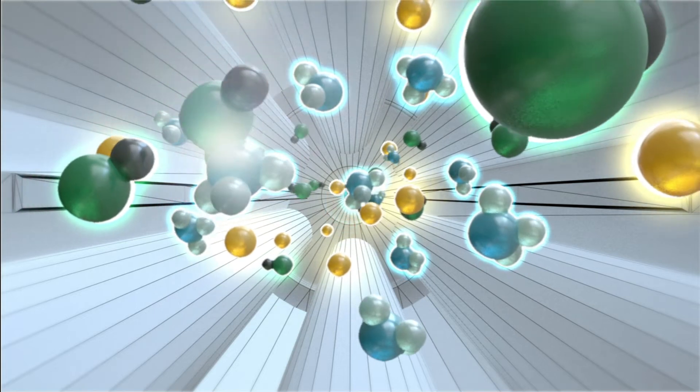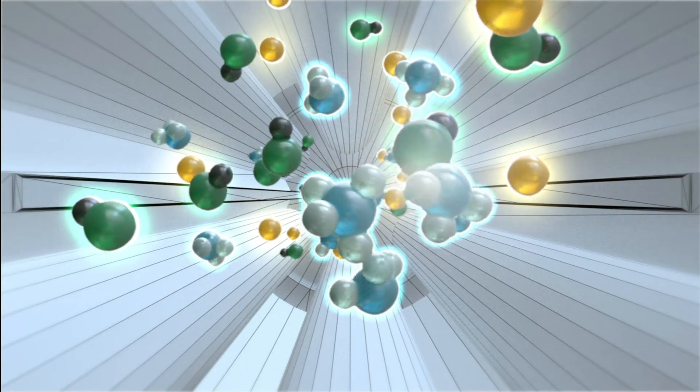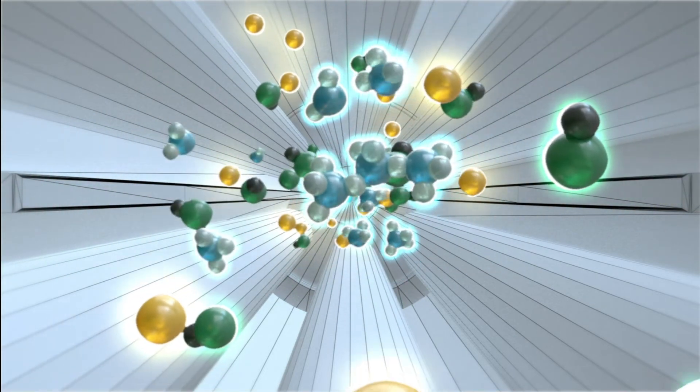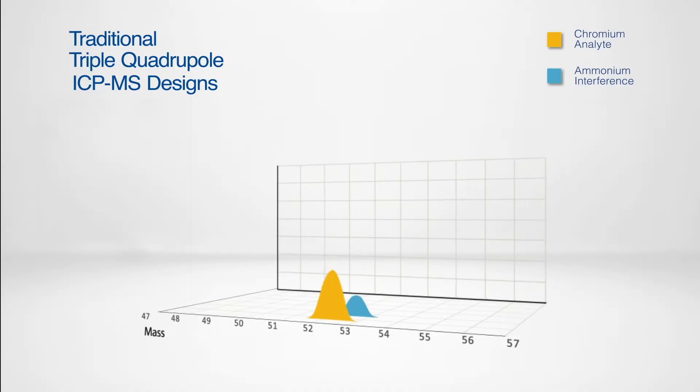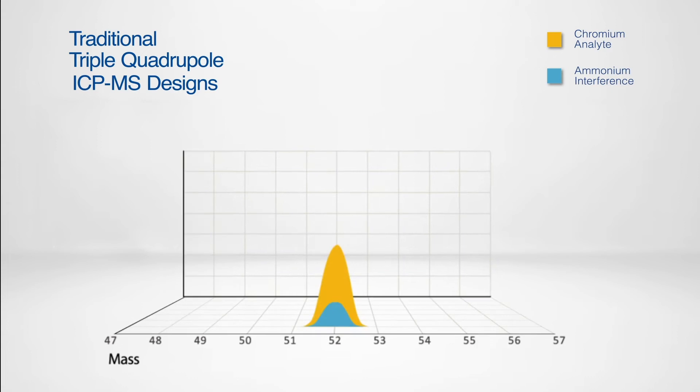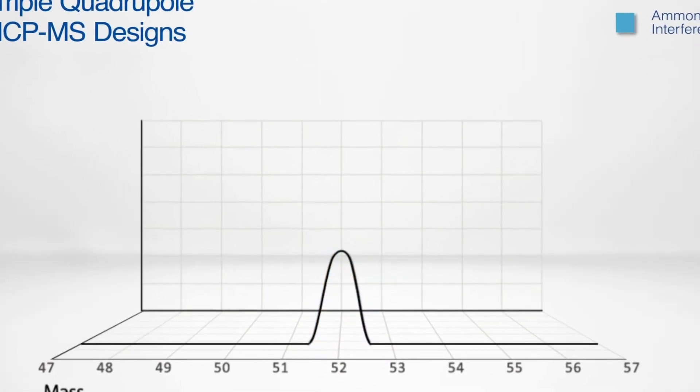However, new peaks from reaction by-product ions also form in the cell, one of which is at mass 52 and will not be separated from the analyte ion in the third quadrupole. So how can we make sure we never get a false positive?